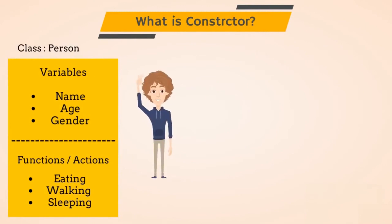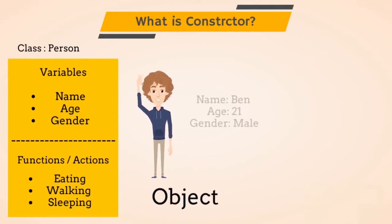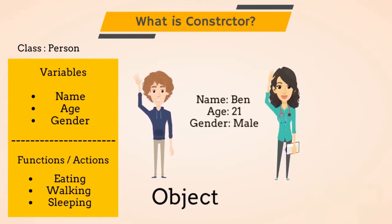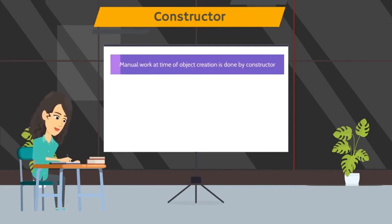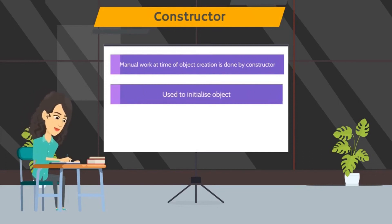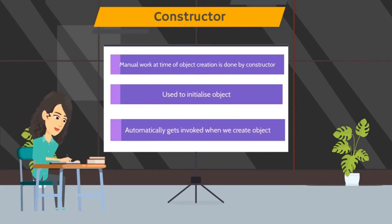Consider a class Person. When we want to add a new person to our system, we have to create an object of it and do some manual activities like giving a name, adding gender, etc. Every time a new human object is created we have to repeat these activities. Here the constructor comes into the picture — instead of doing all this manually, we can use a constructor, which will initialize all these variables for us and will automatically get invoked when we initialize the object.